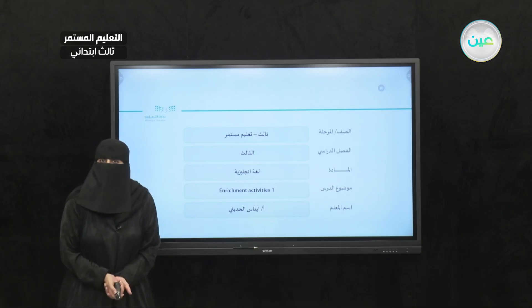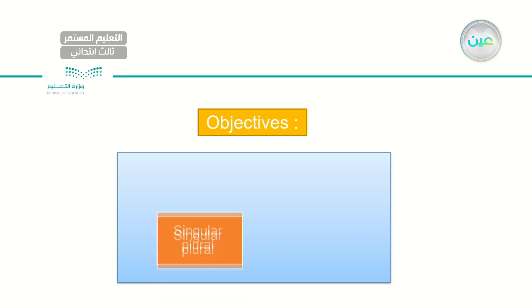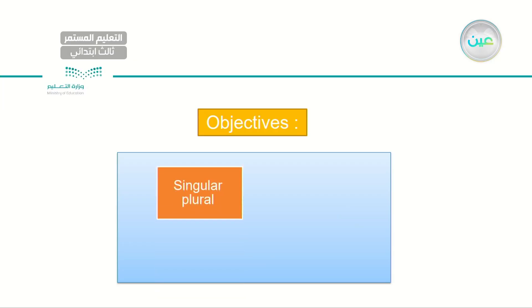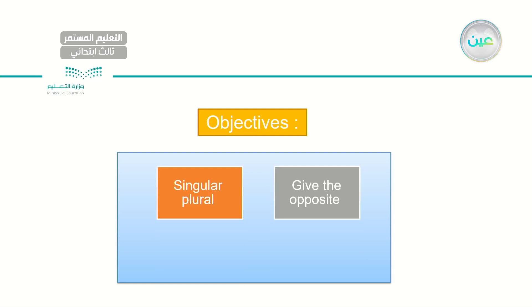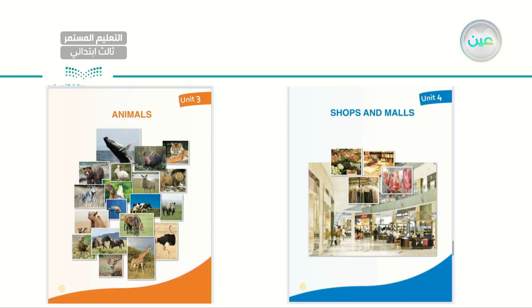The topics are animals, shops, and malls. So let's start. By the end of these activities, we will be able to differentiate between singular and plural. Also, we will be able to give the opposite, answer the question: what can animals eat and what can animals produce?